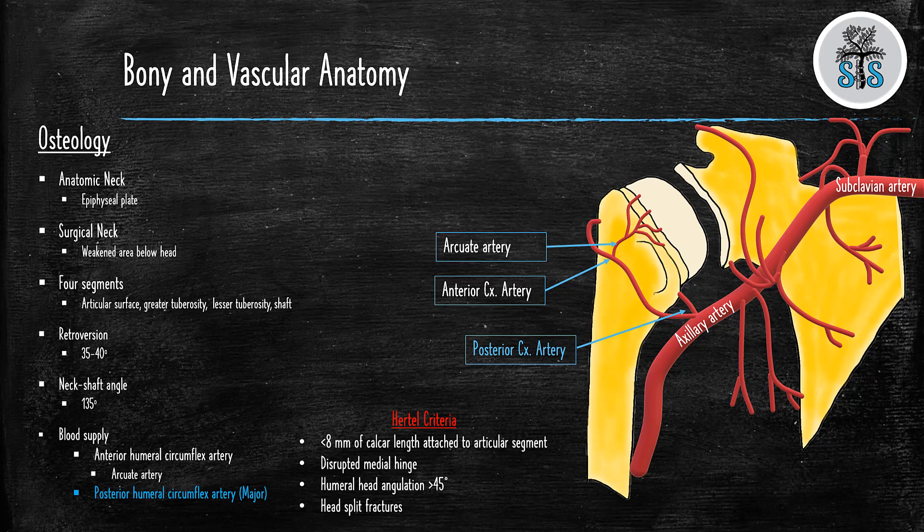However, if you have a basic fracture pattern, less angulation, and you have greater than 8 millimeters of calcar length, these are good prognostic indicators that the humeral head will not have ischemia.